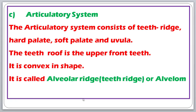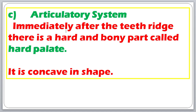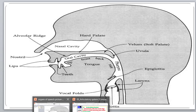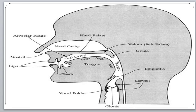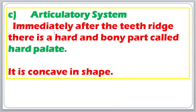Immediately after the teeth ridge or the alveolar ridge there is a hard bony part called the hard palate. It is concave in shape. See here — this is the alveolar ridge, and immediately after the alveolar ridge we come across the hard palate, which is concave in shape.